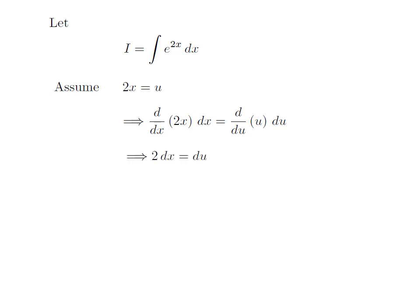As we know, differentiation of 2x with respect to x is equal to 2 and differentiation of u with respect to u is equal to 1. So, we are left with 2 into differential of x is equal to differential of u. I have taken 2 to right. So, I got differential of x is equal to 1 upon 2 into differential of u.